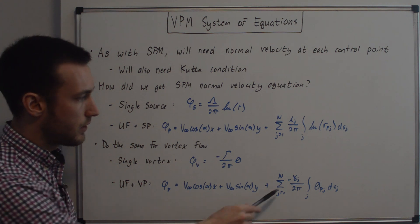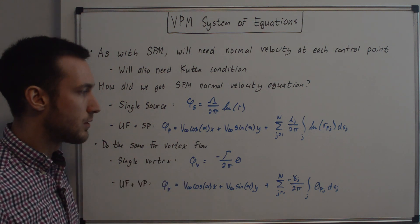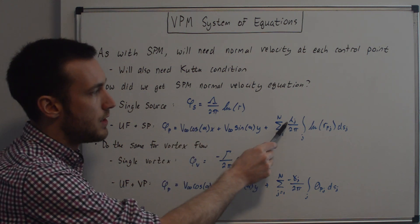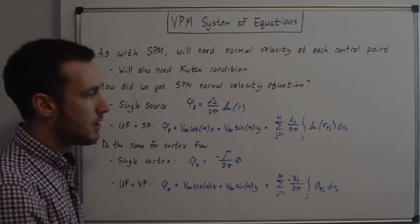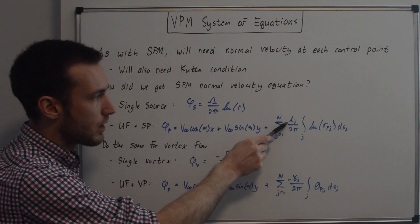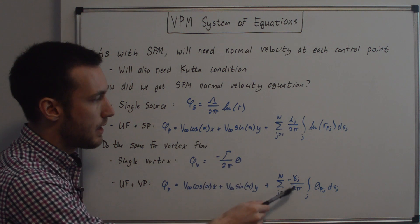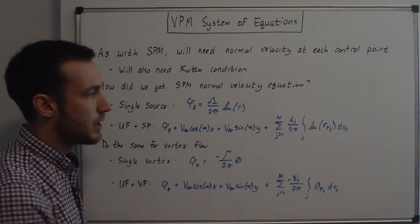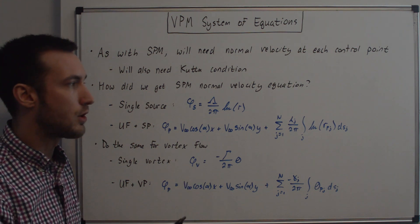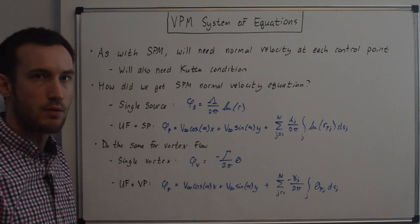Two things to note. First, there's a negative in the vortex term because there's a negative in the single vortex velocity potential equation, and there's no negative in the source term. Second, the lambda and gamma here are lowercase, whereas the ones in the single-element equations are uppercase — that's because these are the source strength or vortex strength per unit distance. Lambda and gamma are outside the integral because the source or vortex strengths are assumed constant on a panel j, which is why they're outside the integral, but can vary from panel to panel.